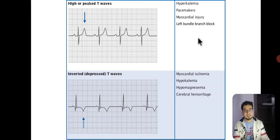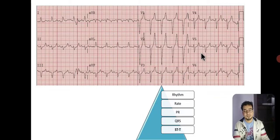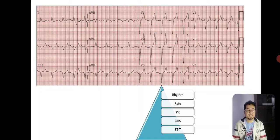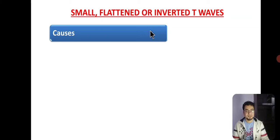T wave may also be inverted in cases of myocardial ischemia, hypokalemia, hypomagnesemia, and cerebral hemorrhage. To identify tall T waves, look at leads V1, V2, V3 and examine the R wave. If the height of the T wave is more than two-thirds of the height of the R wave, it is considered a tall T wave, which may be suggestive of the conditions listed.